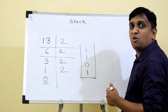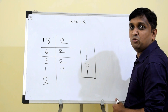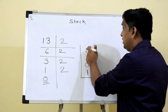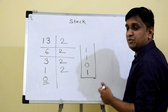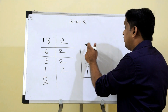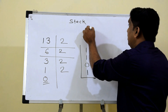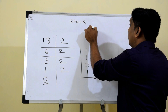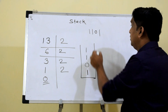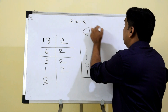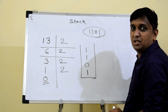After that I pop out all the contents of the stack and print them to the output. Since it is last-in-first-out, the output will be 1 1 0 1 — which is the binary equivalent of 13.